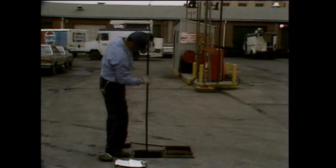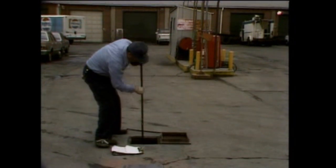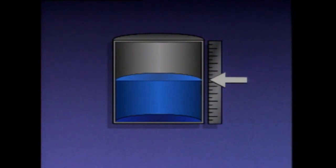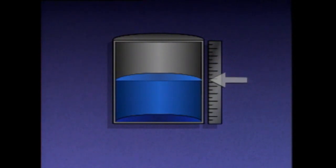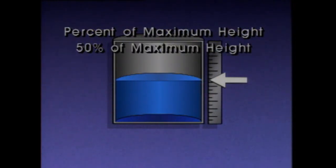The last process variable we'll discuss is level. Level can be defined as the position of a surface above or below a fixed reference point. For instance, in this illustration, if the reference point is at the bottom of the tank, measurements are taken from the bottom to the surface, indicating how much of the tank is filled. If the reference point is at the top of the tank, measurements are taken from the top to the surface, indicating how much of the tank remains to be filled. Another way the level in this tank can be expressed is as a percent of maximum height — for example, the level in this tank is at the halfway mark, so we can say that the level is 50% of maximum height.